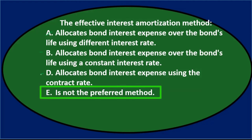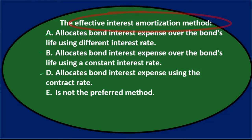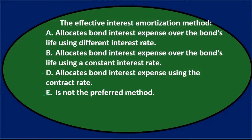Option E says the effective method 'is not the preferred method,' which is actually not correct. There's the effective method and the straight-line method, and the effective method is actually the preferred method — even though it's more difficult — because it matches better and lines up with accrual principles. So E is eliminated, and we're left with B and D.